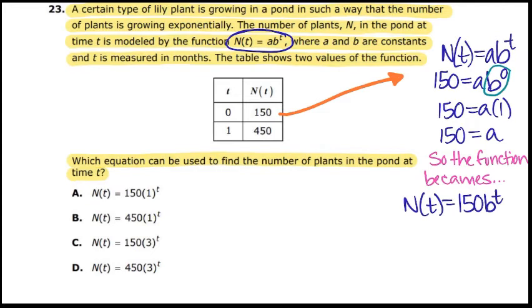Instead of writing a, we're writing 150. I can use the second point from the table to try to find out b, 1,450. So again, we're going to replace those values.